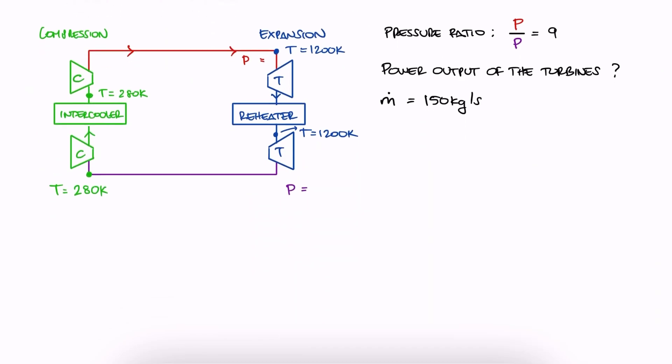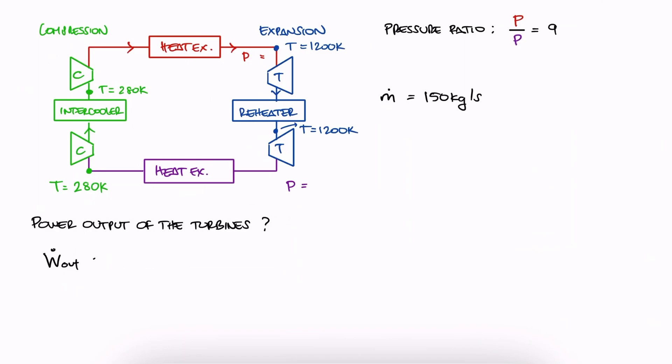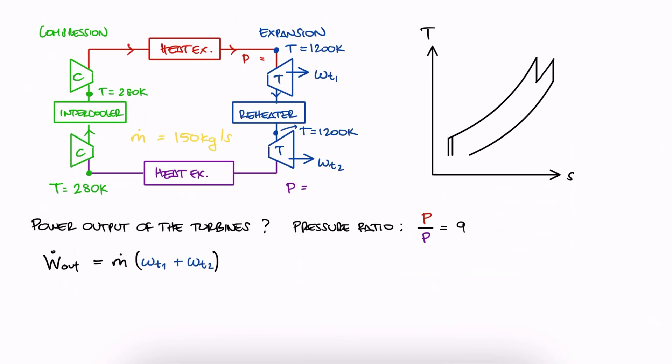We know that the power that the turbines output is equal to the mass flow rate times the specific work of each turbine. If we draw a quick TS diagram for this Brayton Cycle, we see that the specific work that the turbines output is equal to the change in specific enthalpy values, H5 minus H6 and H7 minus H8.